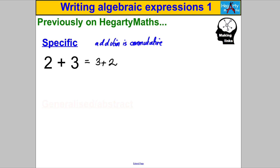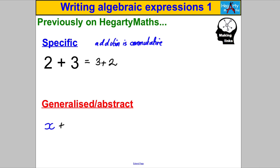You would have to say yes, and write a couple more examples. But what we're moving into now is the world of algebra — you can use algebra to write a generalized or more abstract statement of that fact. Any number, let's call it X, add another number, let's call it Y, always gives the same answer as Y add X. That there is using algebra to make a generalized statement of addition being commutative.